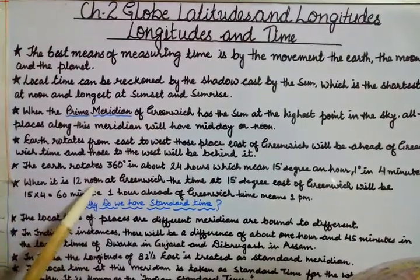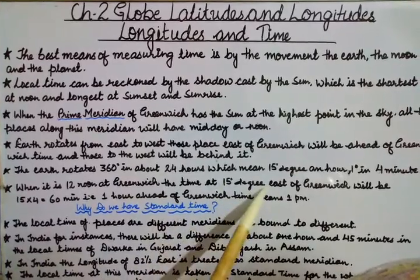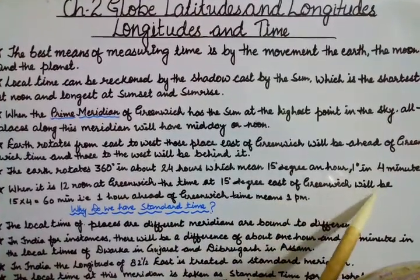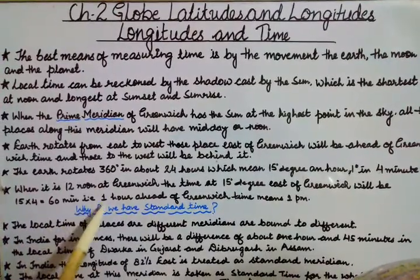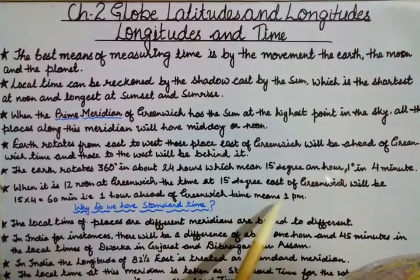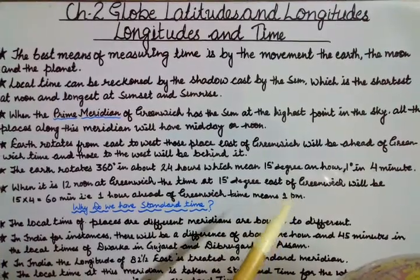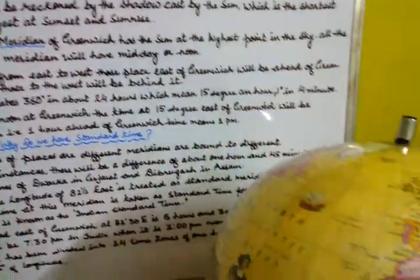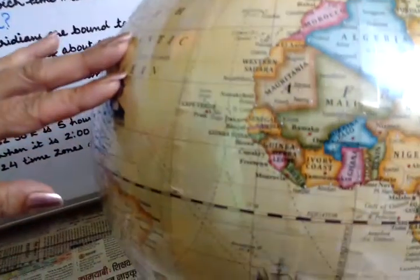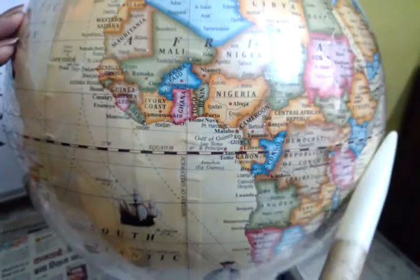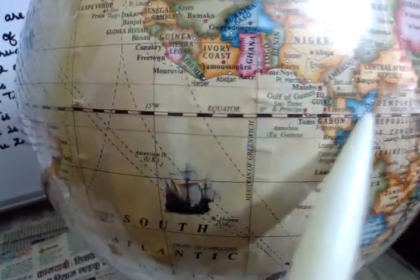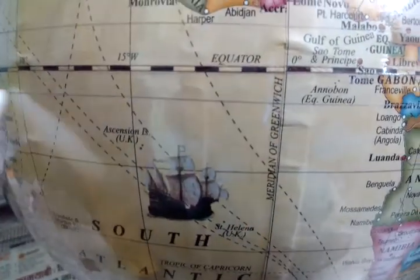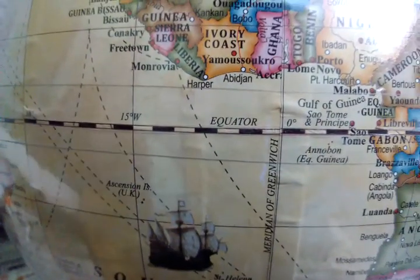When it is 12 noon at Greenwich time, at 15 degrees east of Greenwich: 15 multiplied by 4 equals 60 minutes, meaning 1 hour ahead of Greenwich time — so it will be 1 pm. Countries on the eastern side will be 1 hour ahead, and countries on the western side will be 1 hour behind.